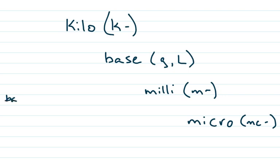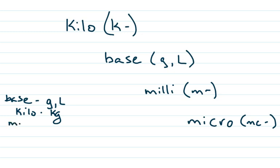The biggest thing to mention is, of course, your base units. For nursing, your base units will be a gram and a liter. So when you convert, if you see just one letter, you're converting to the base. For kilos, the only one we'll work with is kilograms. For millis, you can be working with milligrams or milliliters. And for micros, we will only be dealing with a microgram, abbreviated MCG. A base is only one letter.